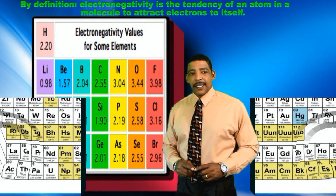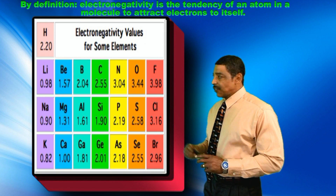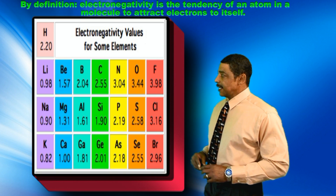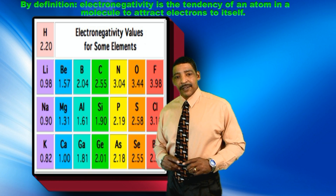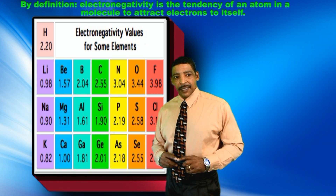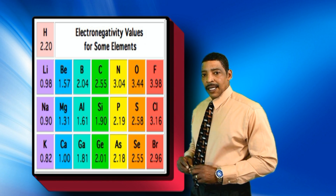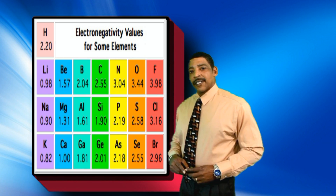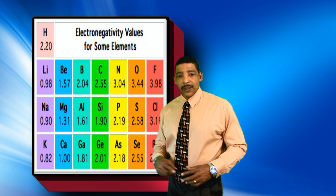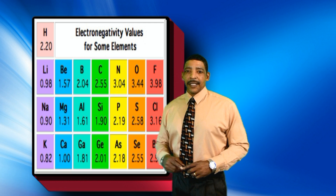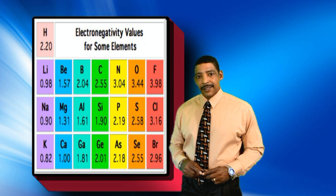Consider the element fluorine, whose electronegativity value is 3.98, compared to the electronegativity value for the element lithium, which is 0.98. Lithium will tend to undergo oxidation because of its low electronegativity value, and fluorine will tend to undergo reduction.